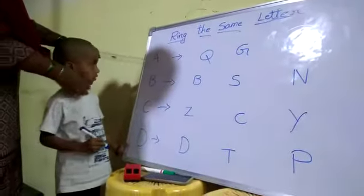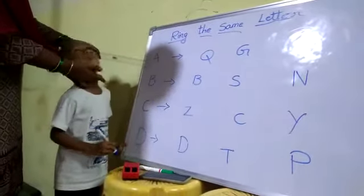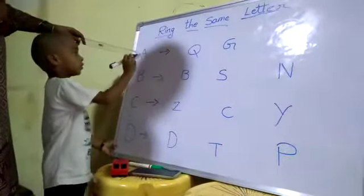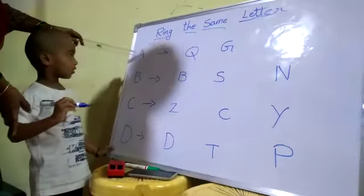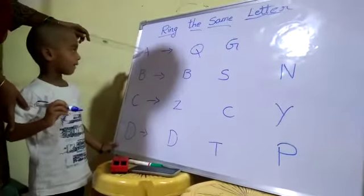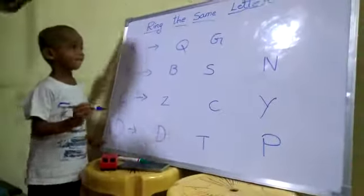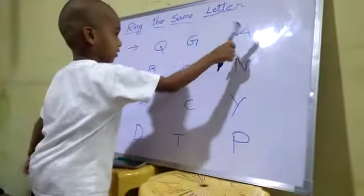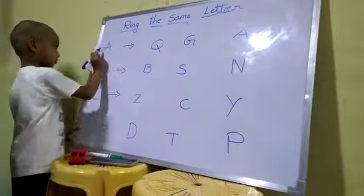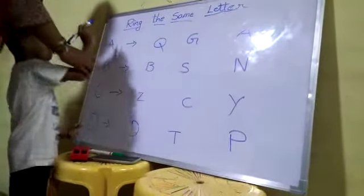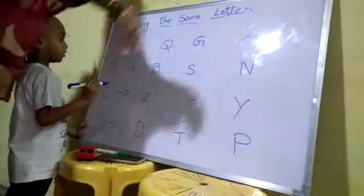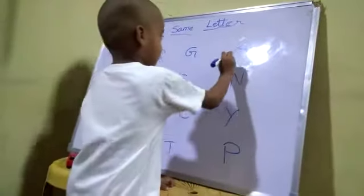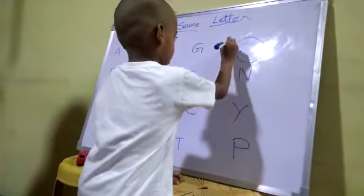A. What is this letter? See, look at the board. What is this letter? A. Where is the A? Ring the A letter. This is A. Where is the A? This side. Very good.